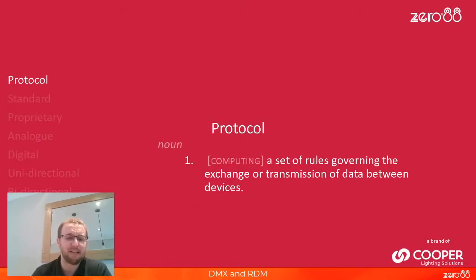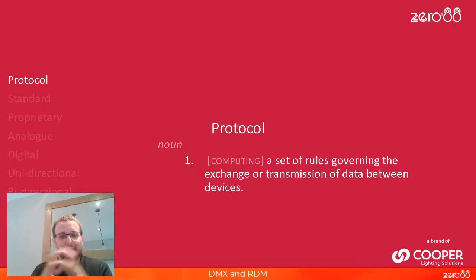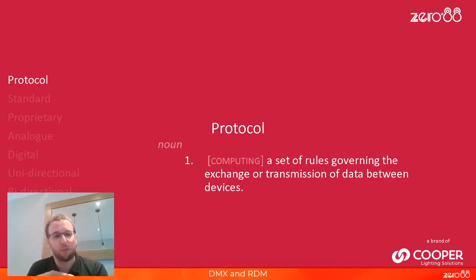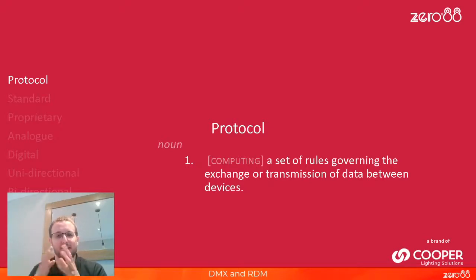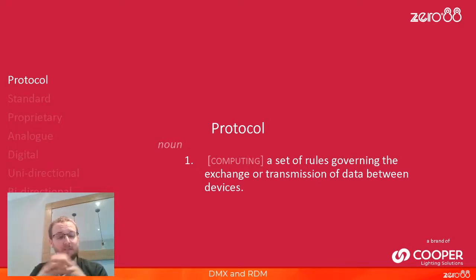First, terminology. A protocol is a set of rules about how one thing can talk to another. For example, if you were to go in to see the Queen, there is a protocol — a way you have to act, a way you have to behave, a way you have to address the Queen. We do exactly the same in lighting.